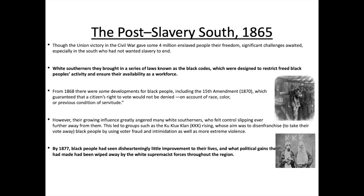White southerners brought in a series of laws known as the Black Codes, designed to restrict freed black people's activity and ensure their availability as a workforce. So even though they weren't slaves anymore, they wanted to stop black people from doing anything except working for those southern slave owners.